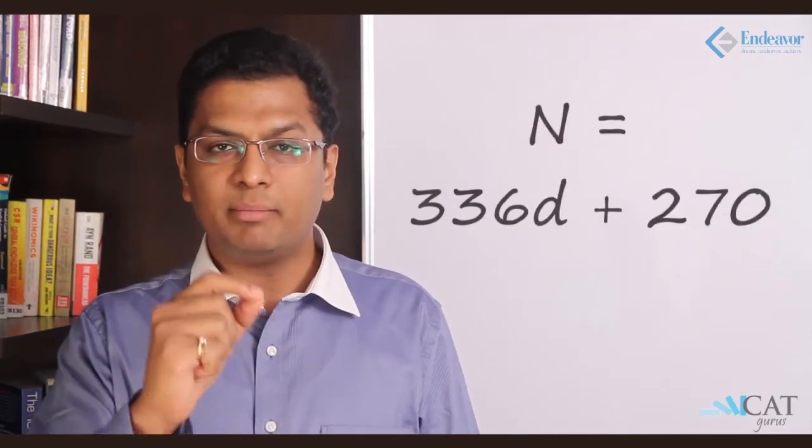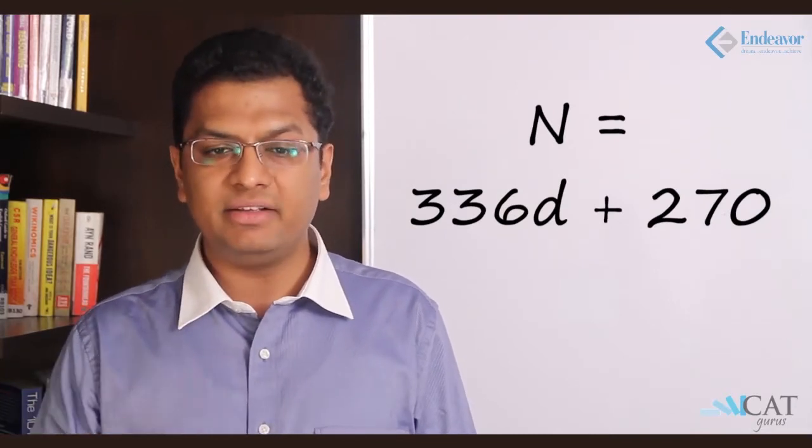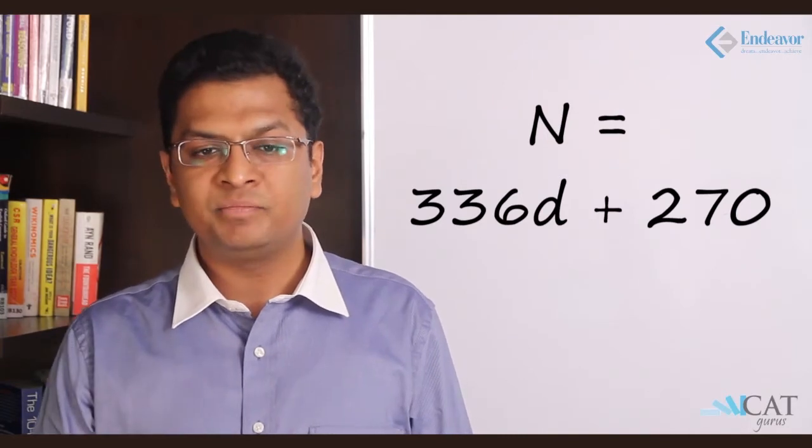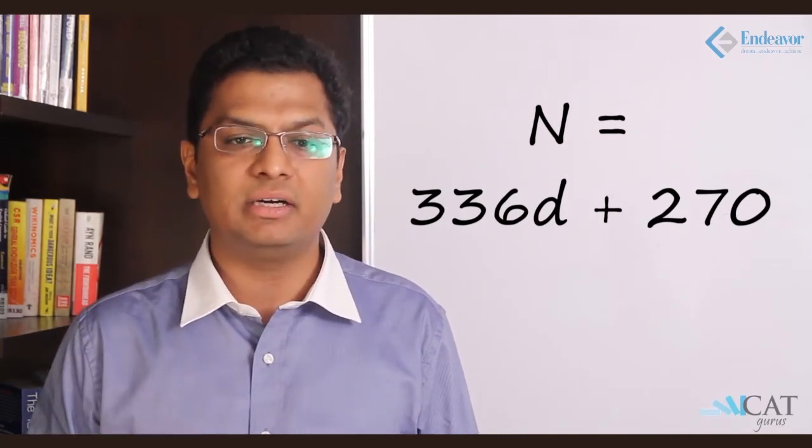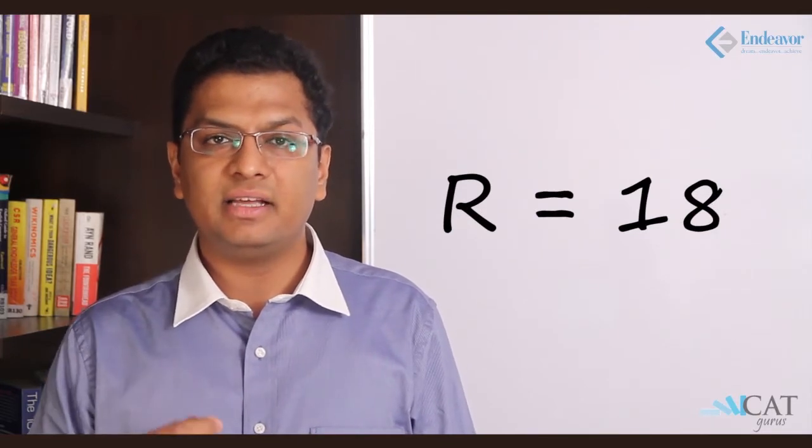What will be the remainder if this is divided by 21? So let us divide it. The number becomes 336d plus 270. And if we divide it by 21, we see that 336 is completely divided. It is only 270 that we should be worried about. So we get the remainder of 18.